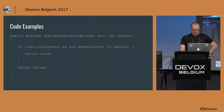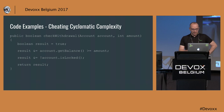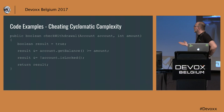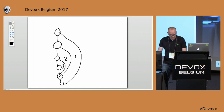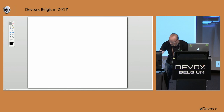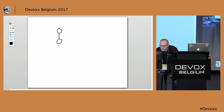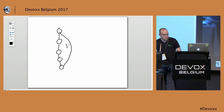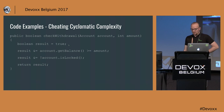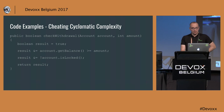There are some tricks to cheat on cyclomatic complexity. For example, we create a boolean, do an operation, another operation, and then return — there are no branches, no if statements. The complexity is just one. But is this code easier to read than the other two? I disagree. So cyclomatic complexity can be useful, but sometimes you can create code that according to the rules has low complexity yet still has complexity built in.